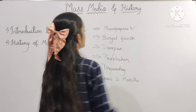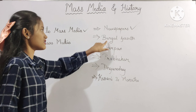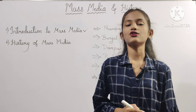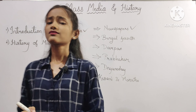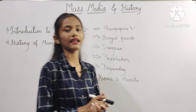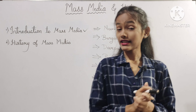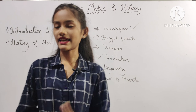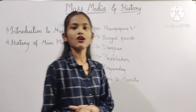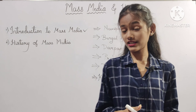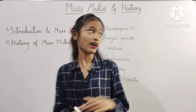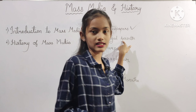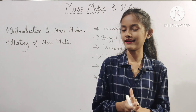The second sub-topic is Bengal Gazette. The first English newspaper in India was published on 29th January 1780. It was named the Calcutta General Advertiser, or Bengal Gazette. James Augustus Hickey, an Irish gentleman, started this newspaper.